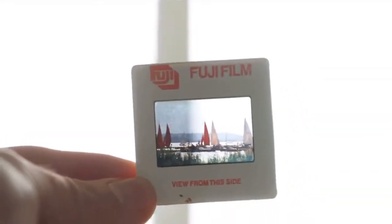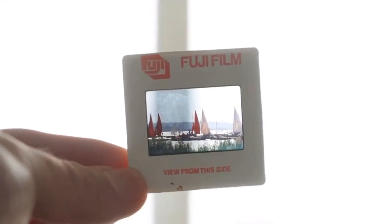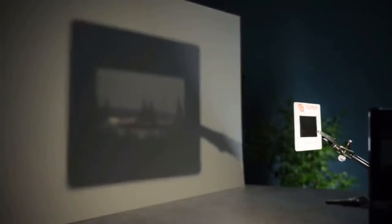For this explainer I'm going to project a slide image, which is basically a small transparent photograph. When it's placed in front of a light source, all it does is cast vague blurry colors.